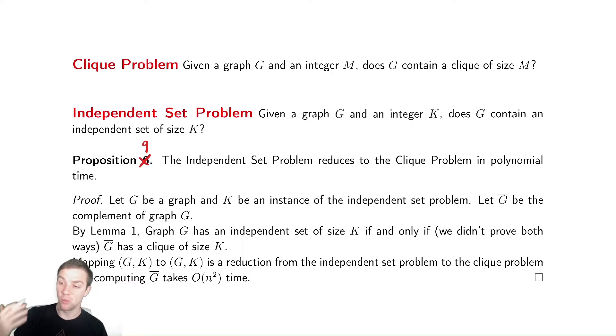So we start by saying, what is an instance of the independent set problem? Well, the independent set problem, according to what I have up here, is a graph and an integer K. So I let G be a graph and K be an integer.